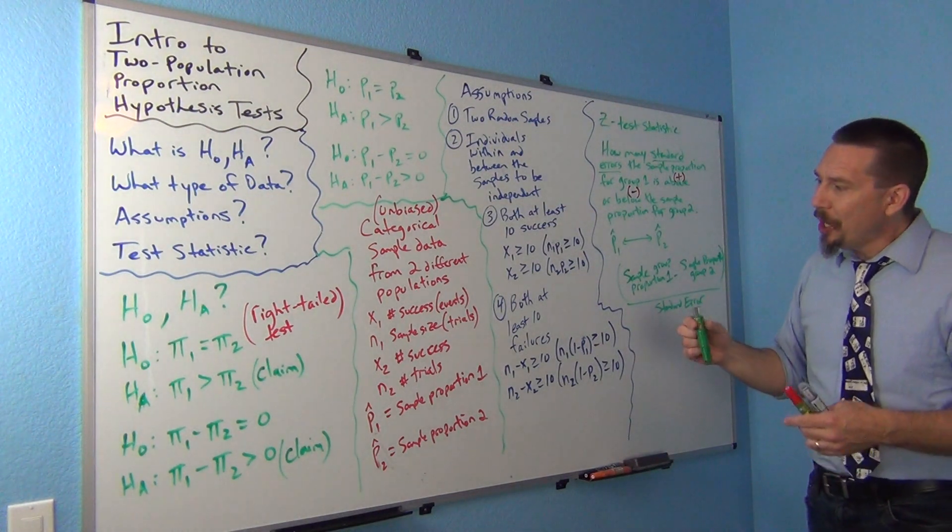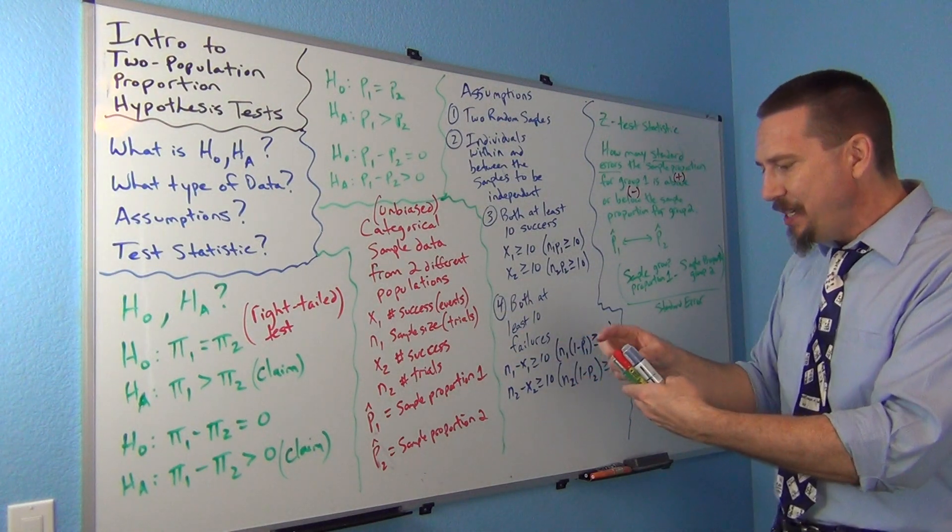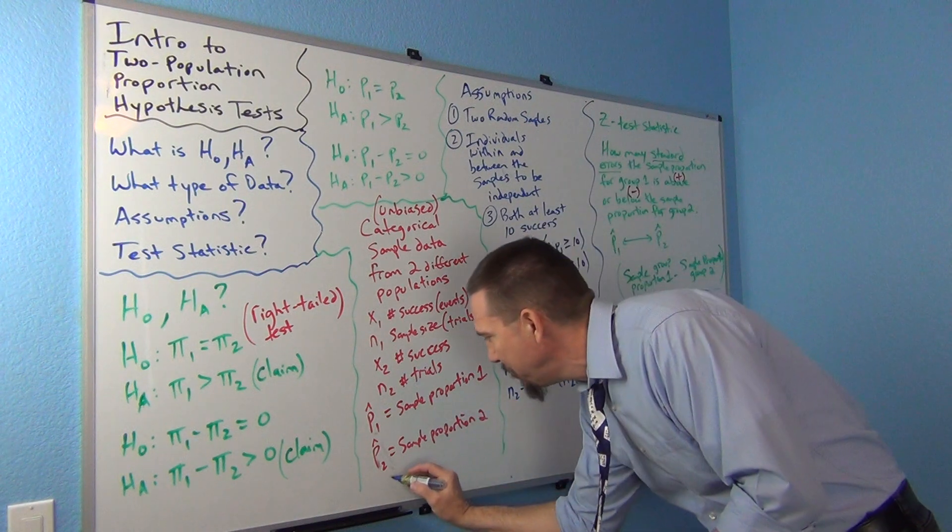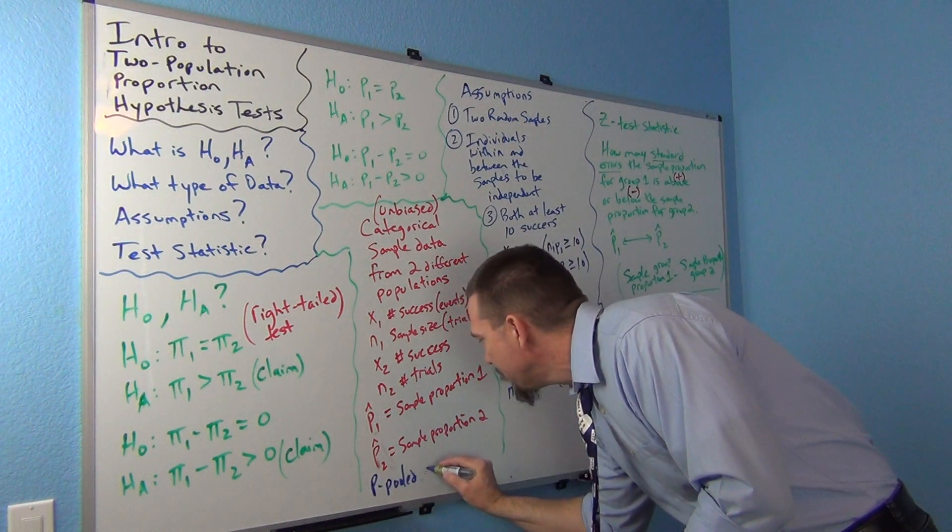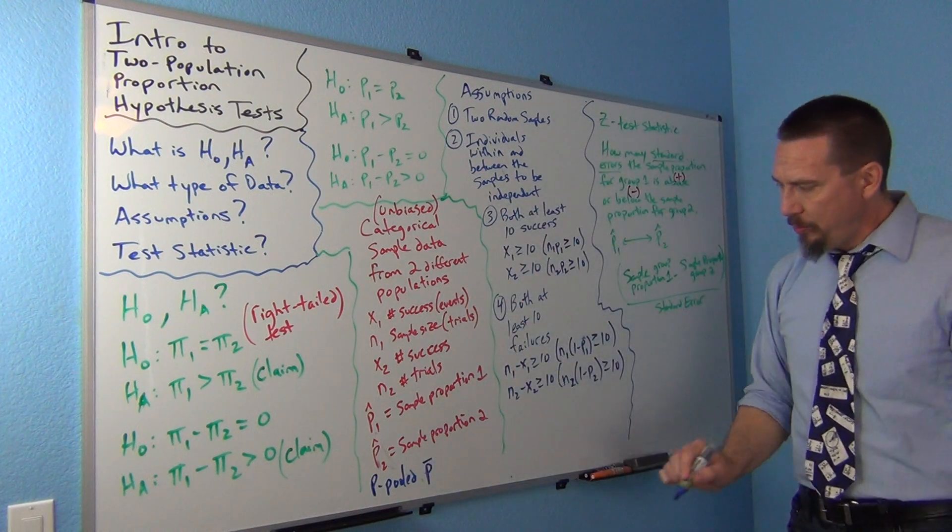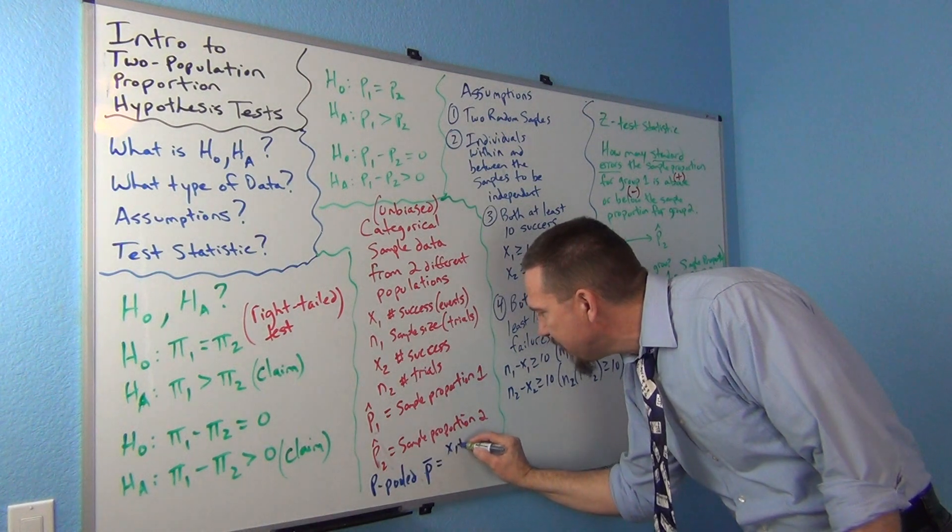What is pooling? All right. Well, pooling is basically putting these together. So, we call this P-pooled. I'm going to write it down down here. P-pooled. Sometimes looks like a P with a bar over it. When you see that in a formula, it just means you're putting the data sets together.